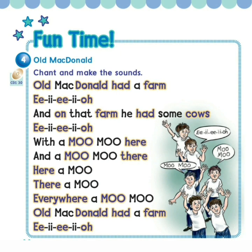Old MacDonald had a farm, E-I-E-I-O. And on that farm he had some cows, E-I-E-I-O. With a moo moo here and a moo moo there, here a moo, there a moo, everywhere a moo moo. Old MacDonald had a farm, E-I-E-I-O. And on that farm he had some horses, E-I-E-I-O. With a nay nay here and a nay nay there. Now with sheep: and on that farm he had some sheep, E-I-E-I-O. With a ba ba here and a ba ba there, everywhere a ba ba. Old MacDonald had a farm, E-I-E-I-O.